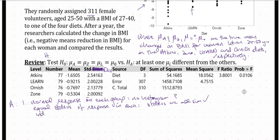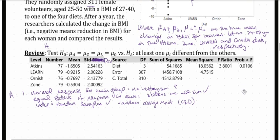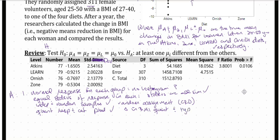We need independent and random samples. This has been satisfied — we did this through random assignment. This was a completely randomized design, so everyone was assigned to only one group and was randomly assigned to only one group, giving us both randomization and independence. We need a quantitative response and a categorical predictor — that has been satisfied. We've got change in BMI, which is quantitative, and type of diet, which is categorical. So we are good.